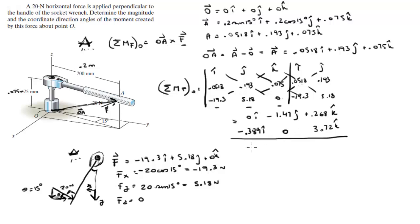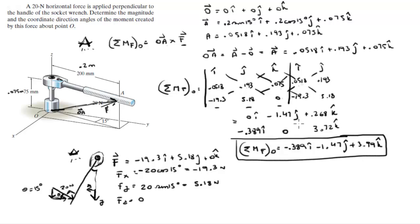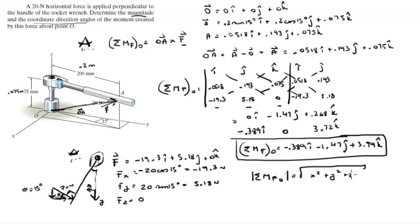Adding all terms up, the moment that F creates about O equals −0.389i − 1.47j + 3.99k. They are asking for the coordinate direction angles and the magnitude. To find the magnitude, take the square root of the sum of the squares of each component: the magnitude comes out to be 4.27 Newton-meters.